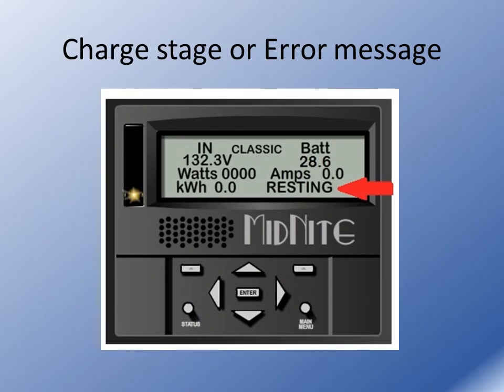Here we're showing the charge stage, or the error message, whichever the case may be. You will see in the morning on the PV system it start out in bulk MPPT. Anytime you see MPPT, that means the Classic is pushing as much current as it's capable of into the batteries to try to reach a set point. In bulk MPPT, we're pushing as much as possible to try to reach the absorbed set point.